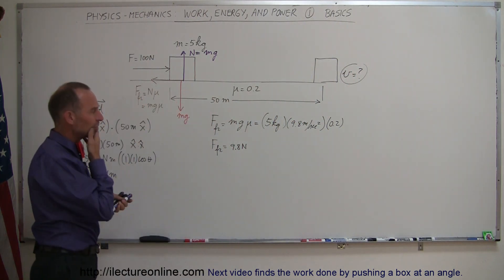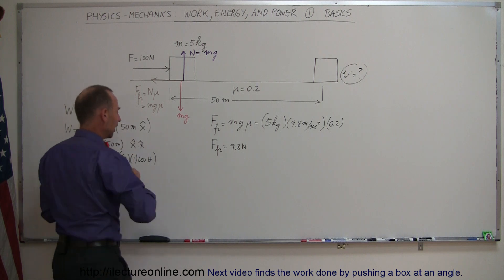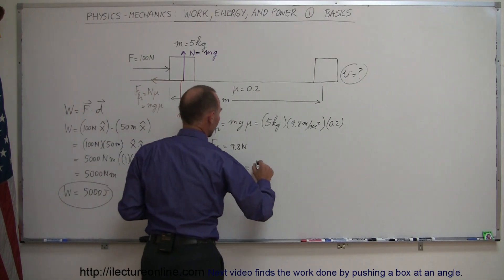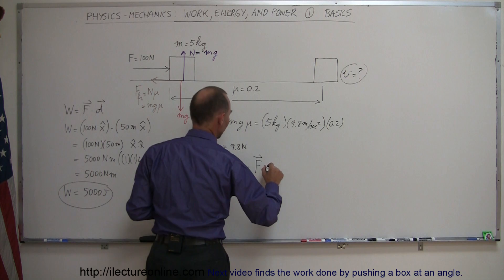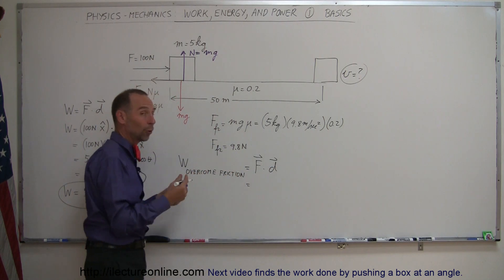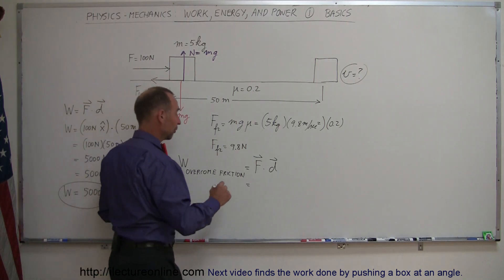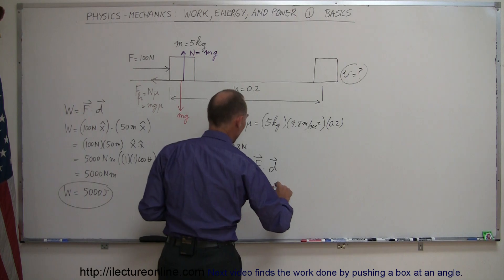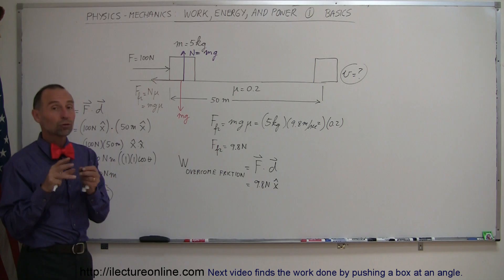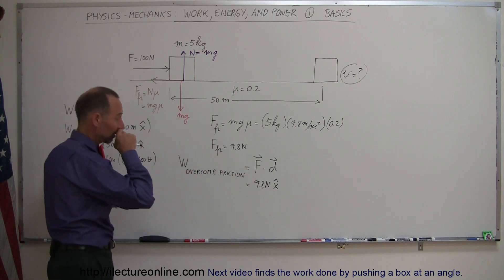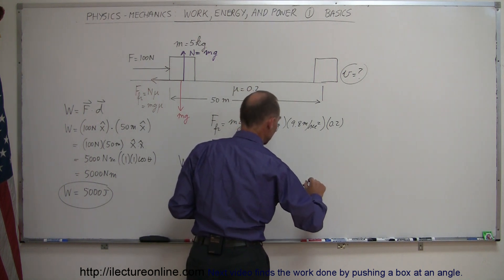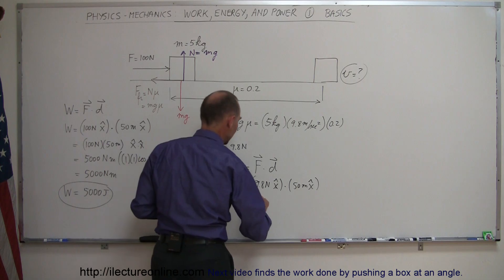So, overcoming friction, let's write an equation that says work done to overcome friction is equal to force times distance, so force times displacement. And so the force required to overcome the friction force is of course 9.8 newtons, and so therefore we have 9.8 newtons in the positive x direction, because even though the friction force is pointing in the negative direction, the force to overcome the friction is pointing in the positive x direction, so the 9.8 newtons in the x direction dotted with the 50 meters in the x direction.